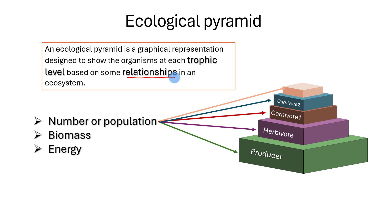We can define an ecological pyramid as the graphical representation designed to show the organisms at each trophic level based on some relationships in an ecosystem.